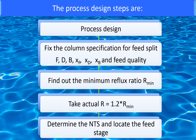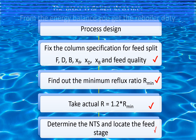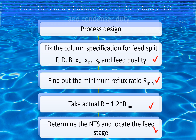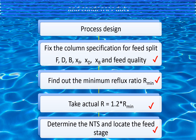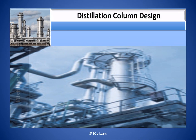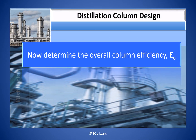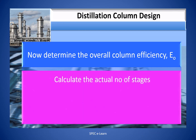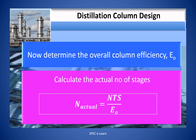The process design steps are: fix the column specification for the feed split; find out the minimum reflux ratio R_min; take actual R equal to 1.2 times R_min; determine the number of theoretical stages and locate the feed stage. From the energy balance, you get the reboiler duty and condenser duty. Then determine the overall column efficiency EO. The actual number of stages is equal to NTS divided by EO.